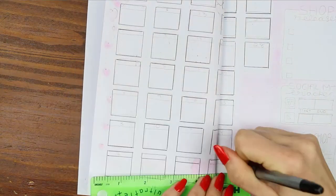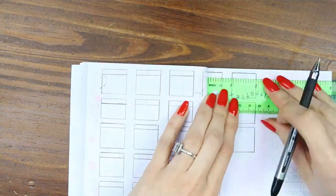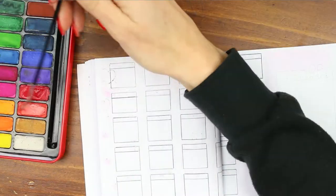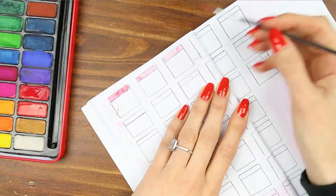So I drew 28 boxes, obviously there are 28 days in February and then I decided to shade in the top half where the date's going to go in red.